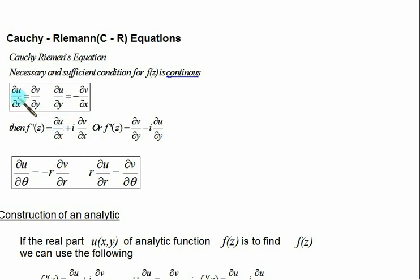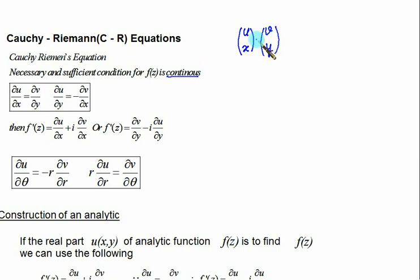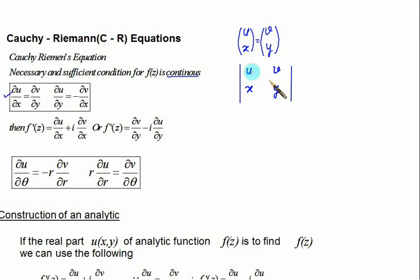You can also use the second definition. To remember the Cauchy-Riemann equations: u is defined along the x-axis and v along the y-axis. Take ∂u/∂x and equate with ∂v/∂y — that's the first equation. For the second equation, use the determinant method with entries u, v, x, y: you take u with y to get ∂u/∂y, and the second term is always −∂v/∂x. So ∂u/∂y = −∂v/∂x.